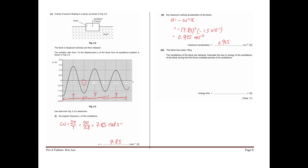Part 3 concerns energy loss due to damping. The block has mass 120 grams. Calculate the loss in energy of the oscillations during the first 3 complete periods. The formula for energy loss due to damping is: half m omega squared times (x-naught squared minus x squared).